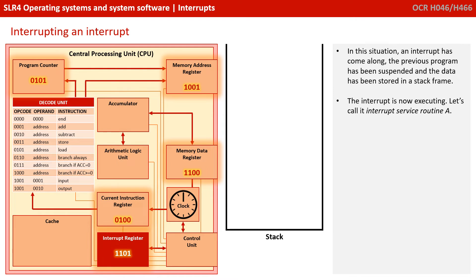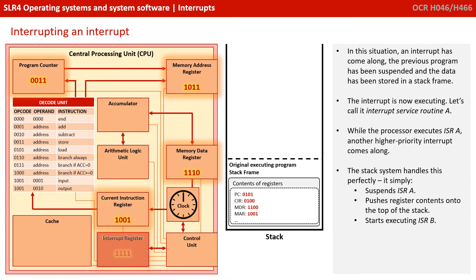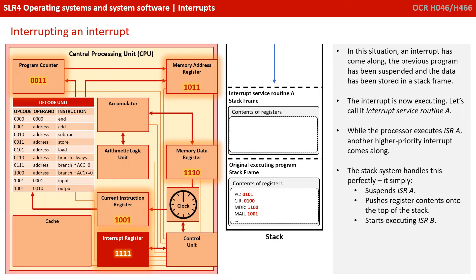We could also have an interrupt which has itself been interrupted. An interrupt comes along, the previous program is suspended, and the data for it is stored in a stack frame. The interrupt is now executing — let's call this interrupt service routine A. While the processor executes interrupt service routine A, another higher priority interrupt comes along. The beauty of the stack data structure is it handles this perfectly fine.